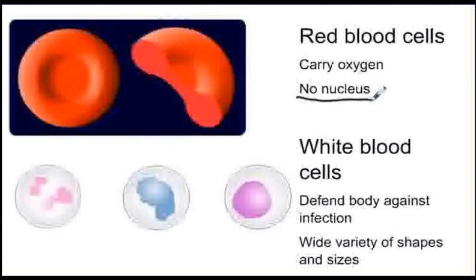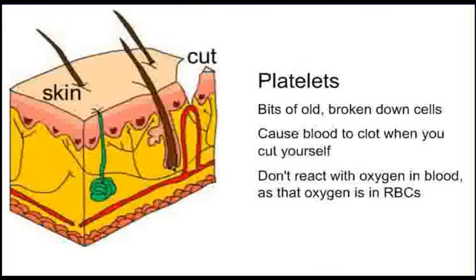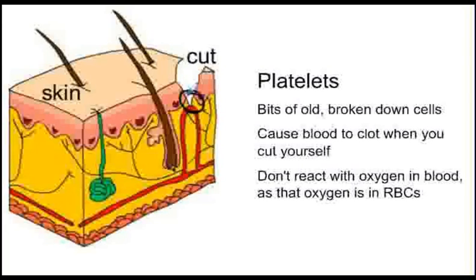White blood cells come in lots of different shapes and sizes but they all have a nucleus and they are there to fight off infection from bacteria or viruses. Platelets are bits of old broken down cells carried by the plasma. When you cut yourself these platelets join together to make a solid barrier, a blood clot, which stops pathogens from entering the body, reducing the amount of blood lost before a scab can form.